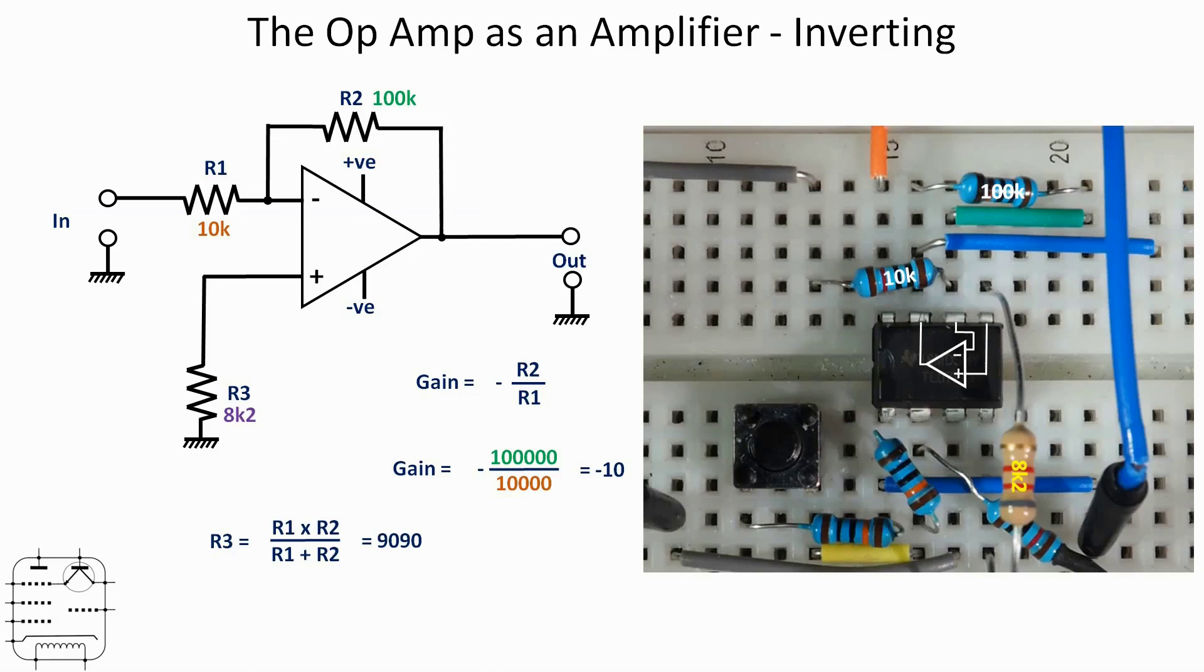So here's the arrangement on the breadboard. This time we're using the top half of the op amp. You can see the 100k and the 10k resistors above, and the 8k2 resistor is the one that goes across down towards the bottom. The circuitry below the op amp is the amplifier you've just been looking at, which was the non-inverting version. So let's take a look at that on the breadboard.